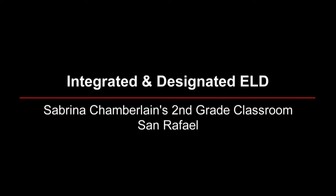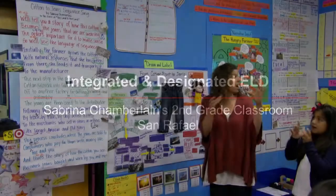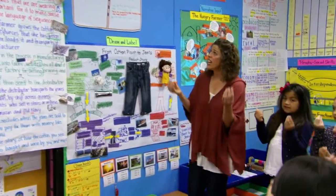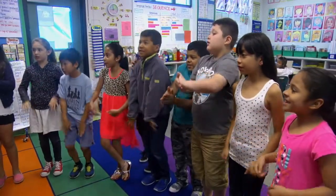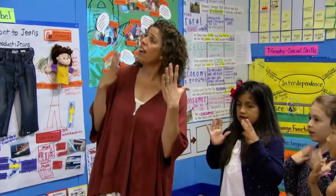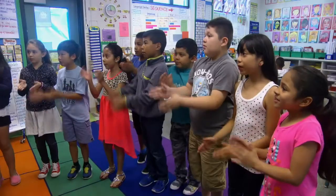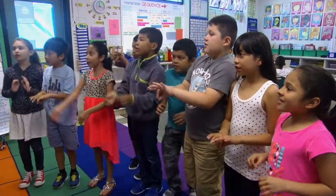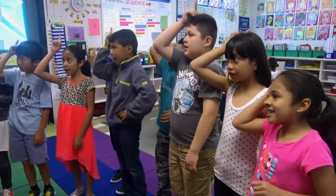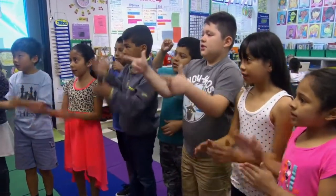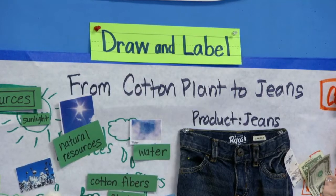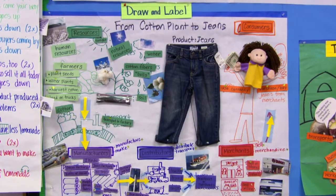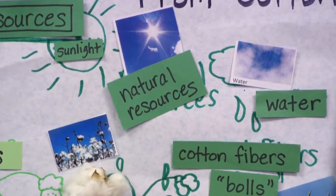We'll tell you a story of how this cotton becomes the jeans that we are wearing. We're in a second grade classroom and they're doing a unit on supply and demand and goods and services. Today's lesson was really zooming in on some content they've covered through a drawn label about how cotton becomes jeans and the different steps it goes through.